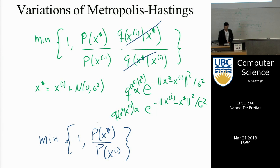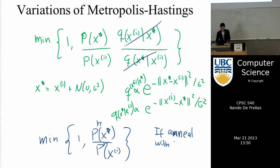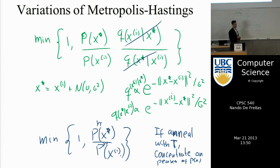If you take this ratio to a power 1/T and then decrease T, your samples will concentrate on the mode of the distribution. That is called simulated annealing: if we anneal with temperature T, we concentrate on the peaks of p(x). It's a version of Metropolis where you focus on moving toward the modes.